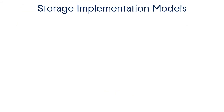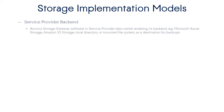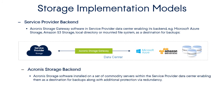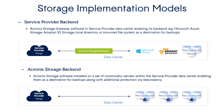Let's take a look at the storage implementation models themselves. There are two storage implementation models offered by Acronis: the service provider backend and the Acronis storage backend. In the first case, the Acronis storage gateway software is installed in the data center of the service provider, enabling backends such as Microsoft Azure, Amazon S3 storage, local directories, or mounted file systems to act as a destination for backups. In the second case, Acronis storage software is installed on a set of commodity servers within the service provider data center, enabling those servers to act as the backup destination and providing additional protection via redundancy.